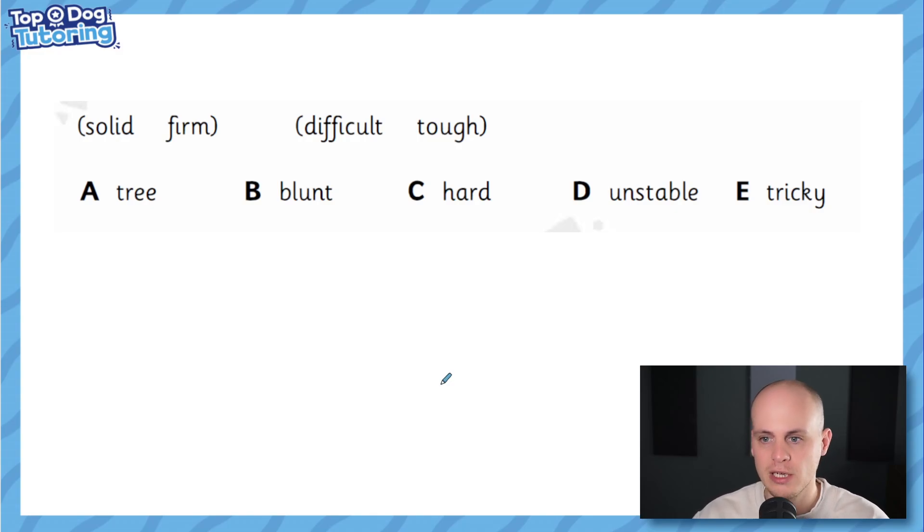This is a verbal reasoning question where you are shown two pairs of words and you have to pick one of the five answer words which goes, that's how vague the language is, that goes best with both brackets of words. Now what ends up happening the majority of the time is the pairs of words will be maybe synonyms of each other so they just mean the same thing but each pair will be different, they'll have different meanings.